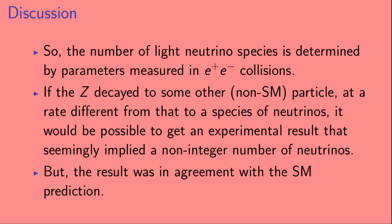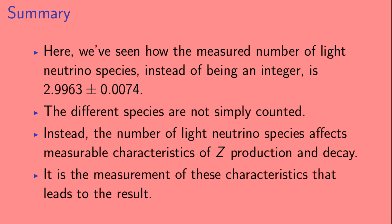The number of light neutrinos is determined by parameters measured in E-plus E-minus collisions. If the Z had decayed to some non-standard particle at a rate different from that to a species of neutrinos, it would be possible to get an experimental result that seemingly implies a non-integer number of neutrinos. But as it turns out, the result was in agreement with the standard model prediction. To summarize: the measured number of light neutrino species is 2.9963 plus or minus 0.0074. The different species are not simply counted; instead, the number of light neutrino species affects measurable characteristics of Z boson production and decay, and it is the measurement of these characteristics that leads to the experimental result.